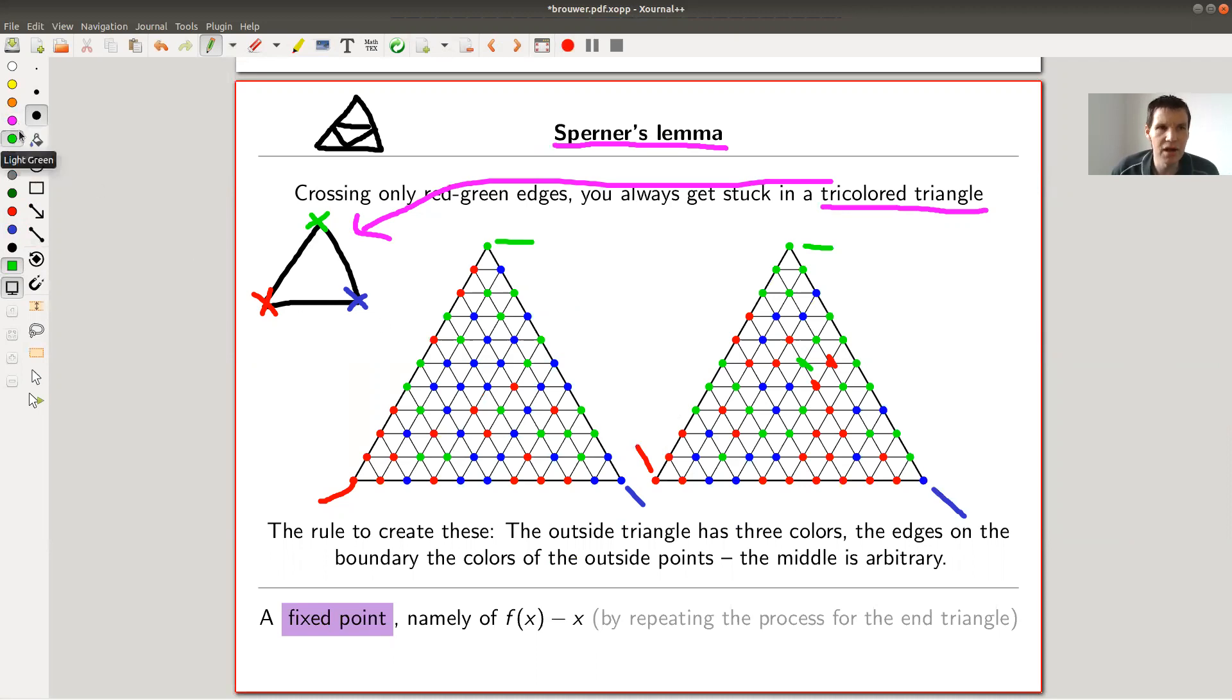And you need an additional rule. So along this edge, the only colors you have are red and green, along this, because they're between the red and green edge vertex, outside vertex. And here along this edge, you only have green and blue, same rule. And along this edge, you have red and blue. And these are the only rules. In the middle, you're basically completely arbitrary.